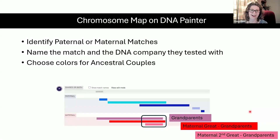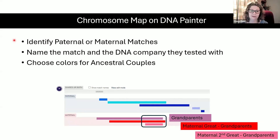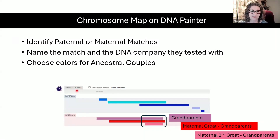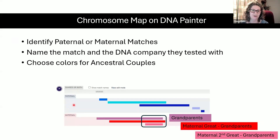Here's a fun example of what that might look like. When you are doing your chromosome map on DNA Painter, it is up to you to identify paternal or maternal matches. You'll need to have done some work already on the testing companies and built some trees to figure out whether matches are at least paternal or maternal, because you will have two copies of each chromosome to paint. A sibling could share on both, and then you would have a paternal chromosome and a maternal chromosome.